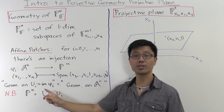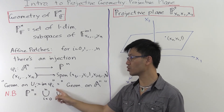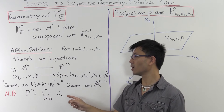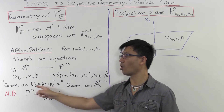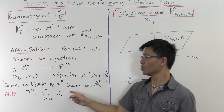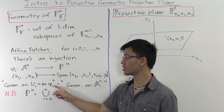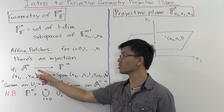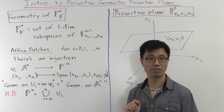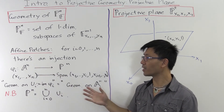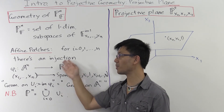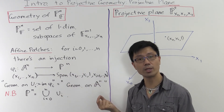The key point here is that the union of all these Ui's, where i goes from 0 up to n, is the whole of PN. So you can write PN as a union of n plus 1 copies of affine n-space. And so that allows you to do the geometry on projective space in the neighbourhood of any point.